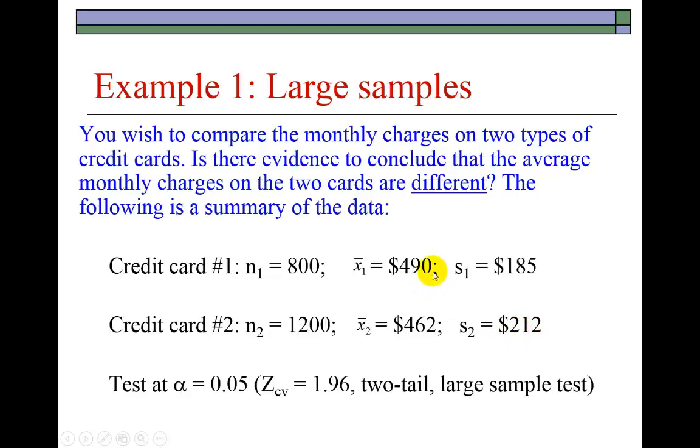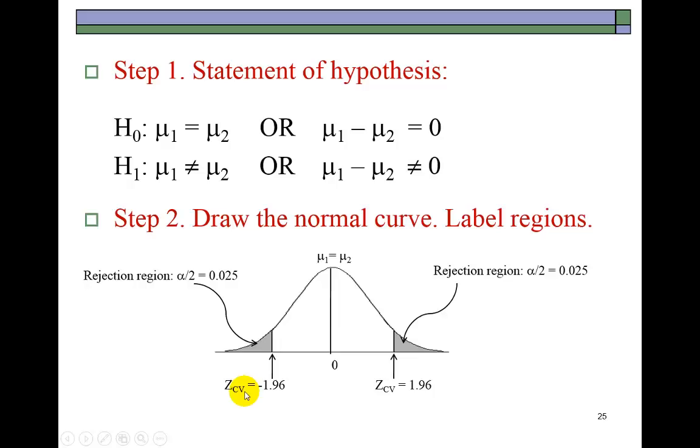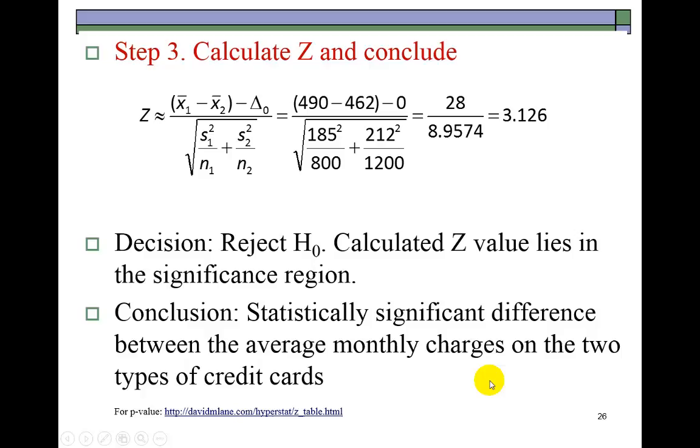Now we can see that the sample mean for credit card number one is greater than that of credit card number two. However, we're unsure as to whether this difference is statistically significant. So at the 5% level, we're going to proceed with making that verification. The statement of hypothesis shows the null to mean that the two means are equal, so the alternative is that they are not equal. Right here on the normal curve, we show the critical values, 1.96 either way, at the 5% level.